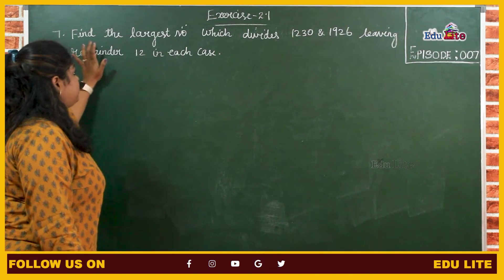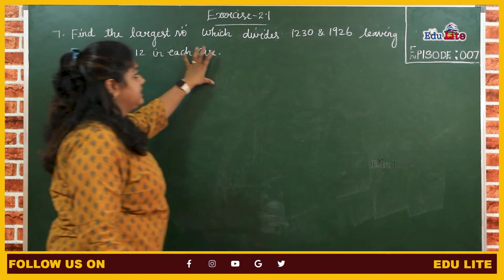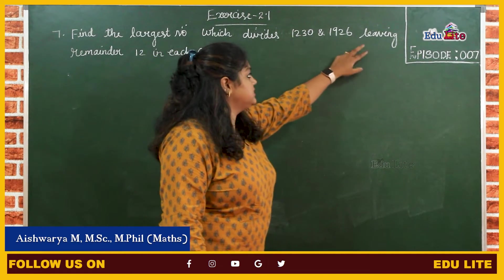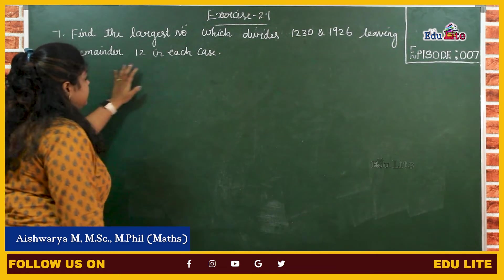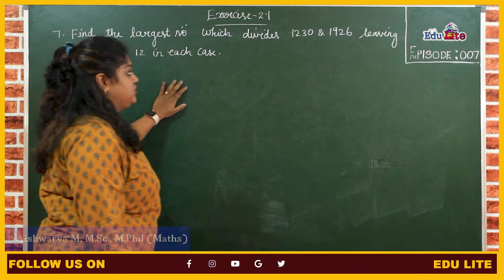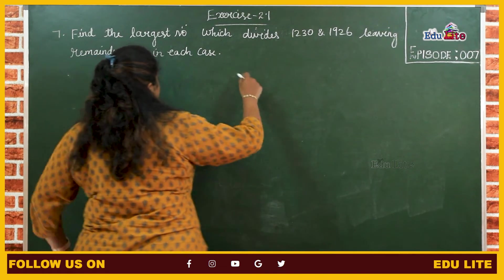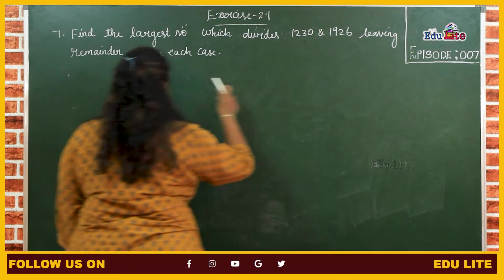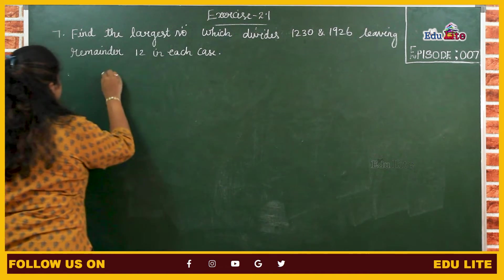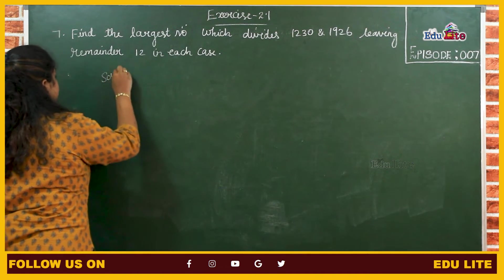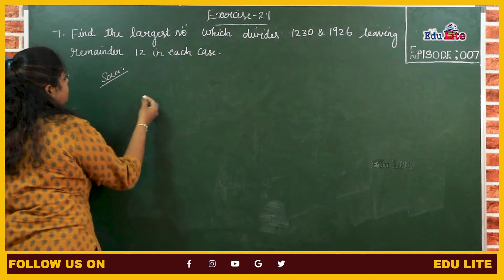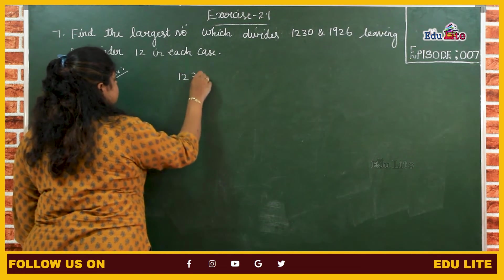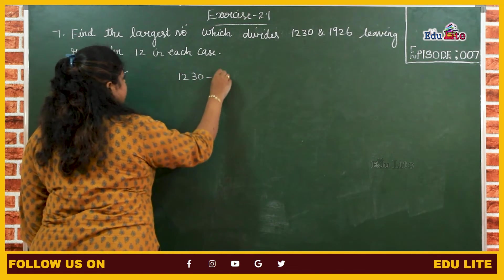In the next problem, we have to find the largest number which divides 1230 and 1926 leaving remainder 12 in each case. So we have to find the largest number which divides these 2 numbers leaving 12 as a remainder. First, we will subtract the remainder from the given number: 1230 minus 12.